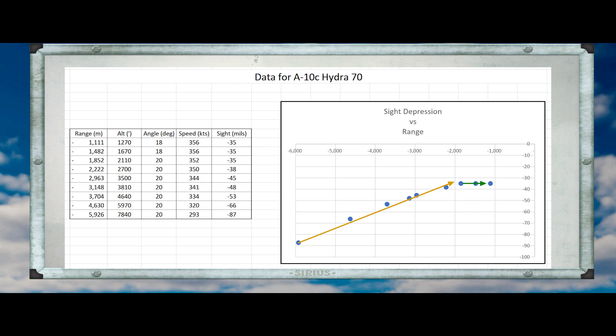And in this region, it's flat. For a normal attack run where the rocket is flying straight at the target, we really want to be in this region of the graph. This will be particularly important when we fly aircraft that don't have a CCIP pipper, because in those aircraft we will want to pick a particular site depression. If we pick a site depression in this region, our accuracy won't depend on getting the other flight parameters exactly right when we press the button.